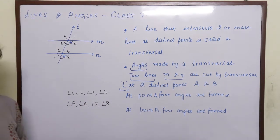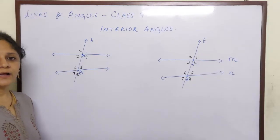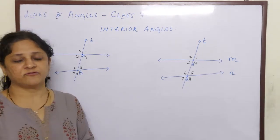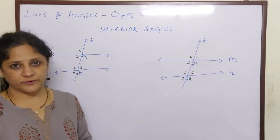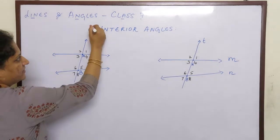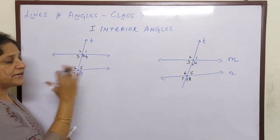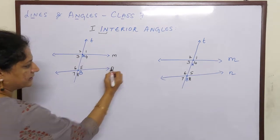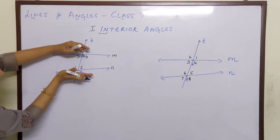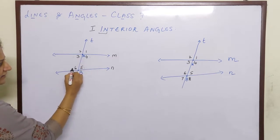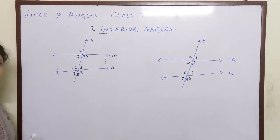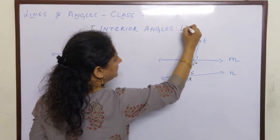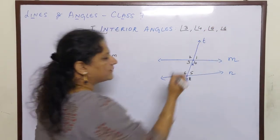There are names for these angles. The first type is interior angles. Interior means inside — between the two lines M and N. Think of the region between the two lines as a box. The angles inside this box are angle 3, angle 4, angle 5 and angle 6. So interior angles are angle 3, angle 4, angle 5 and angle 6.